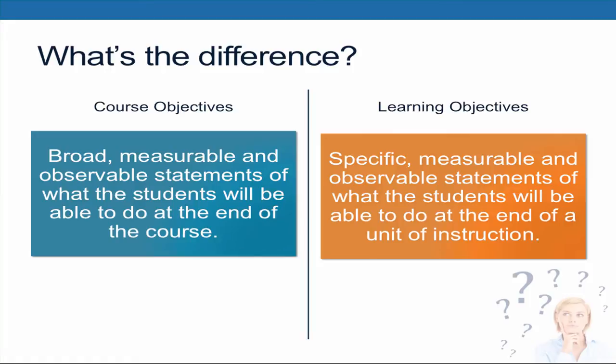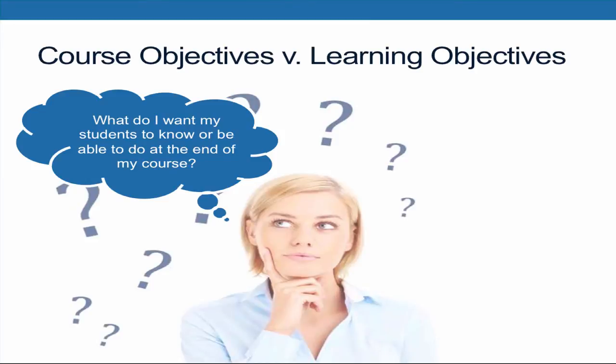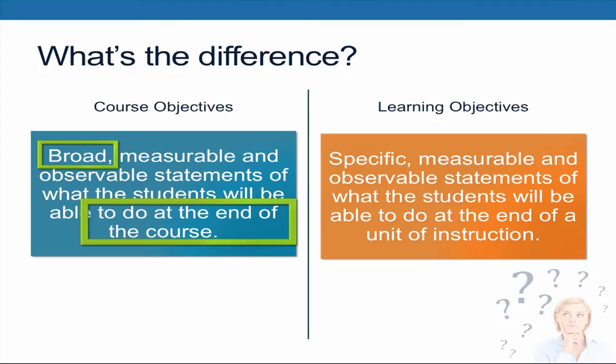After reviewing the definitions, we can see that course objectives are broad statements that reflect general outcomes of learning at the culmination of your course. When thinking about your course objectives, you might ask yourself: what do I want my students to know or be able to do at the end of my course? In contrast, learning objectives are targeted and specific statements rooted in your expectations for student performance that designate exactly what the students need to do to demonstrate mastery of course material.